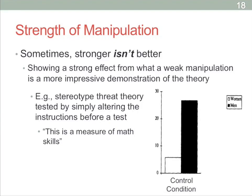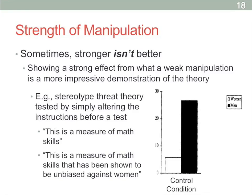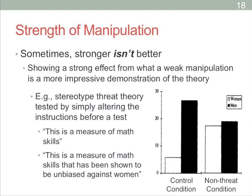The weak manipulation used the exact same participants and the exact same test, but simply added the phrase: 'this is a measure of math skills that has been shown to be unbiased against women.' Basically saying don't worry about the stereotype. In this case, men and women performed exactly equally — no significant difference at all. This is one of those cool instances where a very, very weak manipulation — just a few extra words — could cause a huge outcome, showing the importance of stereotype threat in its effect on behavior and performance outcomes.